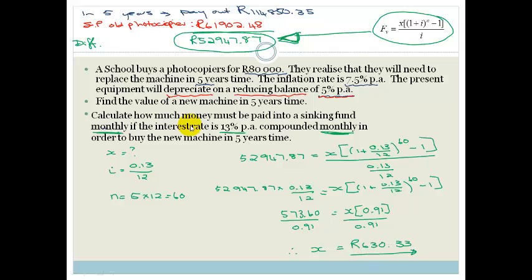And that, grade 12, is how you use sinking funds. Please understand that this question here that I've broken up into bits, they might be mean and nasty and just ask this. They might say, calculate how much money you'll be paid into sinking fund monthly. And you need to know that you need to work out the inflation rate, you need to work out the depreciation, you need to work out the difference to find out what you're actually saving towards, and then work out what your monthly payments are. Obviously, this will be a huge question in the exams, it will be like seven to eight marks at least. So, please go practice this, this is actually a very nice question. It's nice and easy to do if you break it up into its baby steps. Please go practice. Have a lovely day. Cheers.